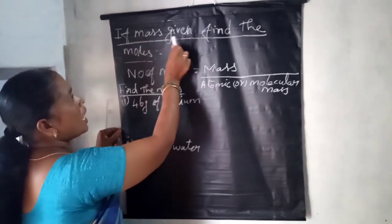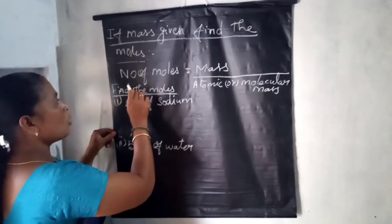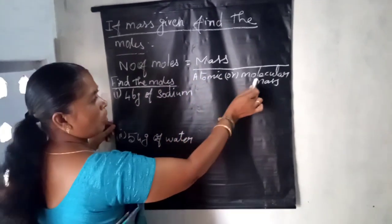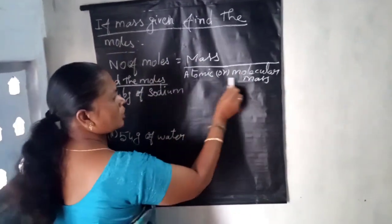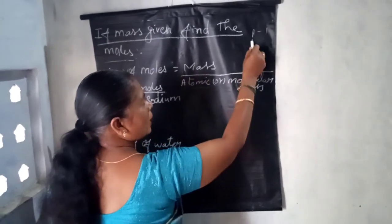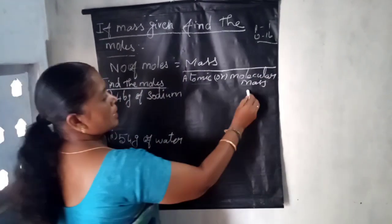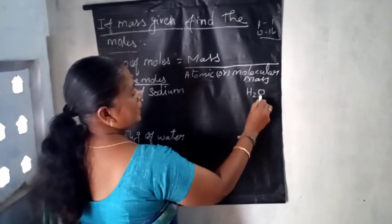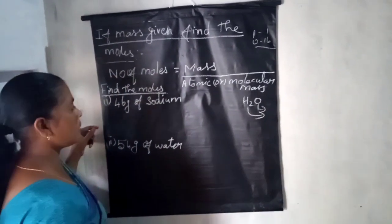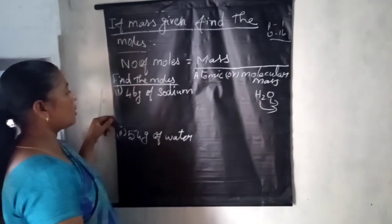If mass is given, find the moles: number of moles = mass ÷ atomic or molecular mass. Atomic mass — for example, hydrogen is 1 and oxygen is 16. Molecular mass requires calculation, for example H₂O calculated using the formula method. For whatever substance is given, you must calculate the molecular mass first.